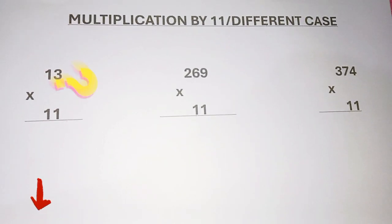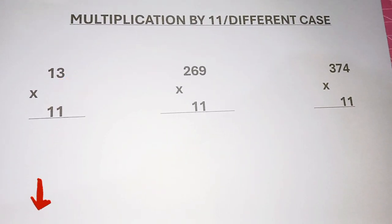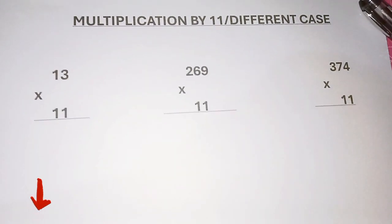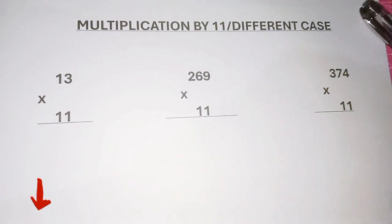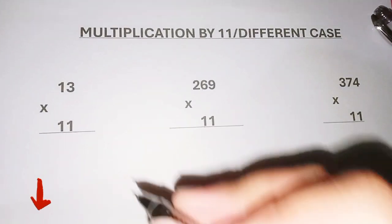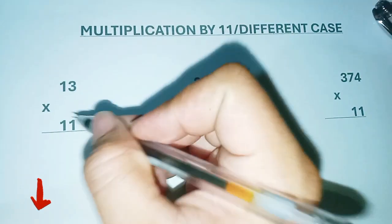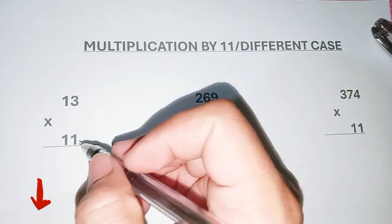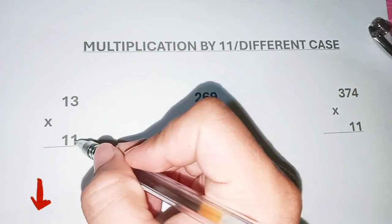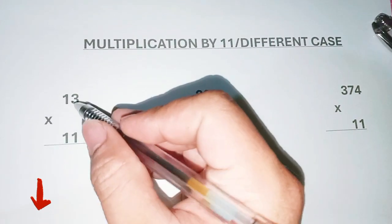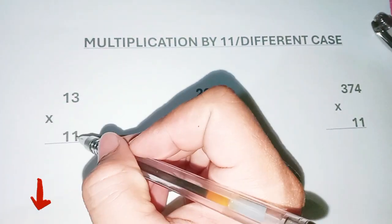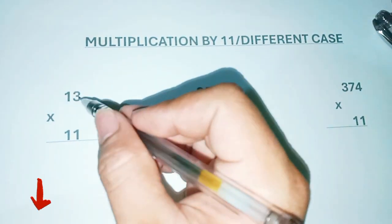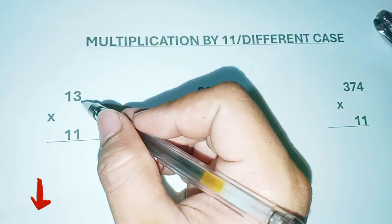Welcome to my channel. This is about multiplication by 11, covering the different cases. This first case is a two-digit number multiplied by 11.